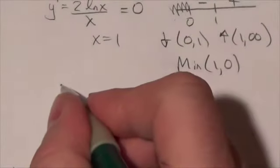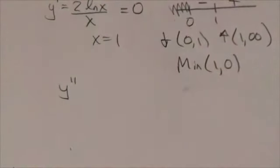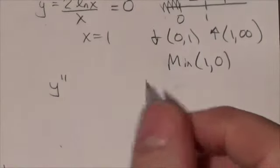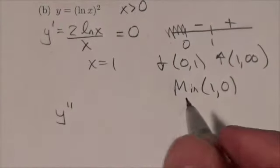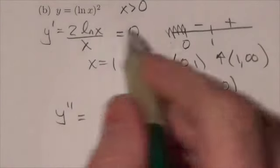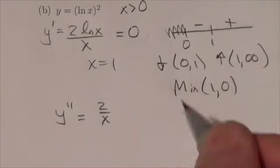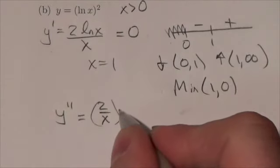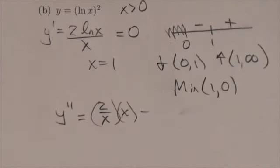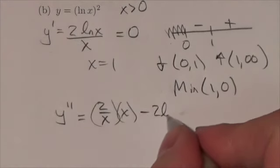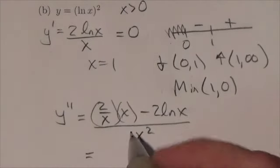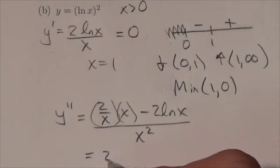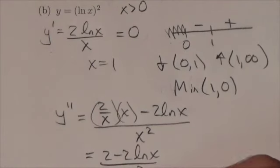Now let's take a quick look at the second derivative so that we can come up with intervals of concavity and the points of inflection. Well, that's going to require us taking the derivative of the derivative. So this is going to require the quotient rule. So the derivative of the numerator will be 2 over x times x, the denominator, minus the derivative of the denominator will just be 1 times the numerator, 2 natural log of x, all over x squared. Well, the numerator, that's going to simplify down to be 2 minus 2 natural log of x all over x squared.